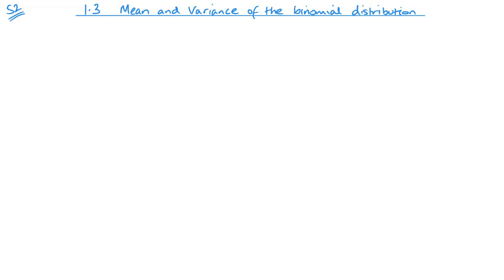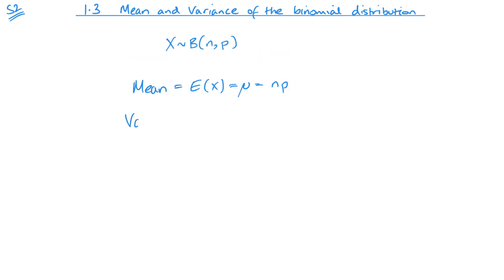First things first: our mean. This is sometimes written as E(X) or μ — those are the symbols we use. For a binomial distribution, the mean is np. The variance is Var(X), which is lowercase σ². Obviously if we square root this we get our standard deviation, and this is np multiplied by (1 minus p).